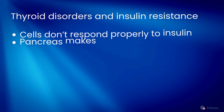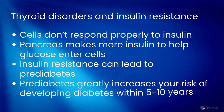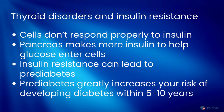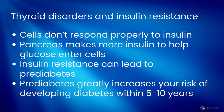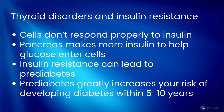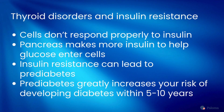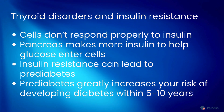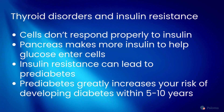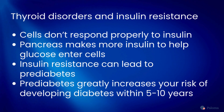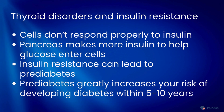Thyroid disorders are linked to insulin resistance, where your cells don't respond properly to insulin. As a result, your pancreas makes more insulin to help glucose enter your cells. This insulin resistance can lead to prediabetes, which greatly increases your risk of developing diabetes in the next 5 to 10 years.